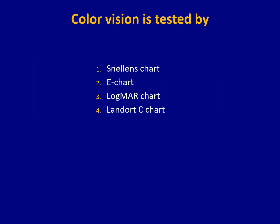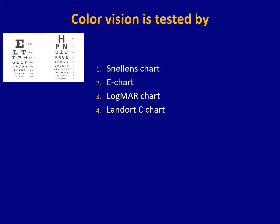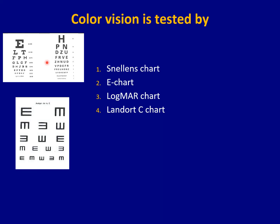Different charts for visual acuity are the Snellen chart — this is the one we normally use. And if the patient is illiterate and cannot read English letters, then we use the E-chart. These are the three legs, and you ask the patient which side the three legs are pointing — right, down, up, or left.